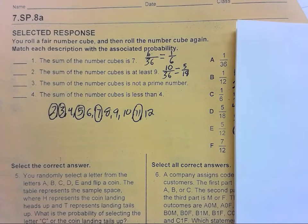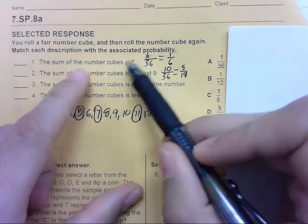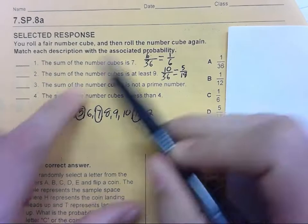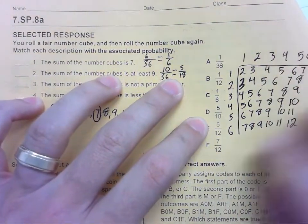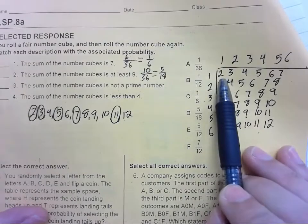I already did this one but something happened with the video, so we'll just start here. We're dealing with all sums here when you roll two number cubes. So I wrote the sums over here, 1 through 6 and 1 through 6.